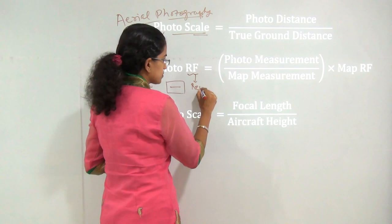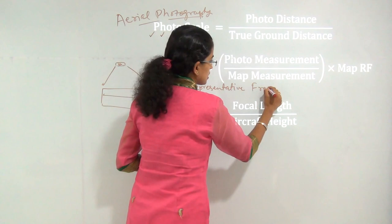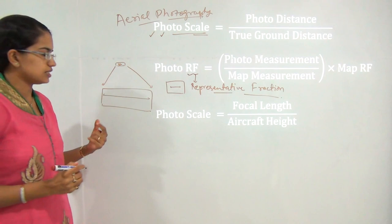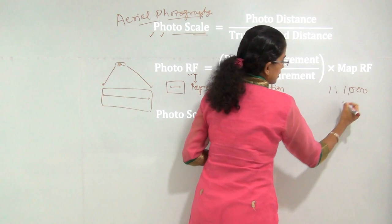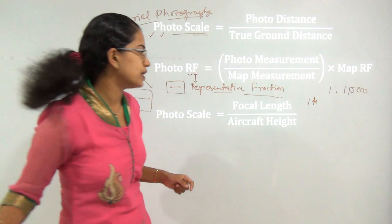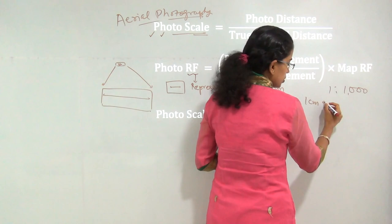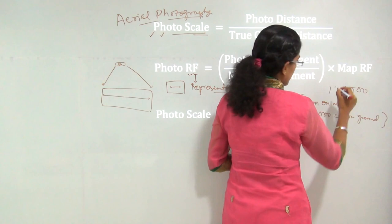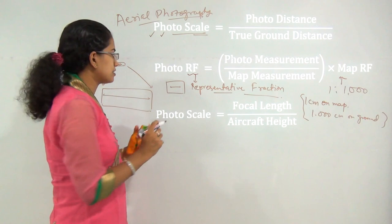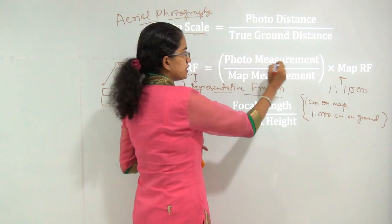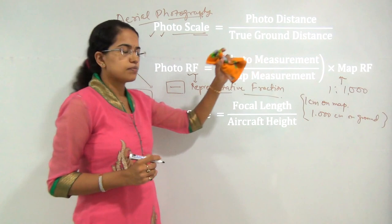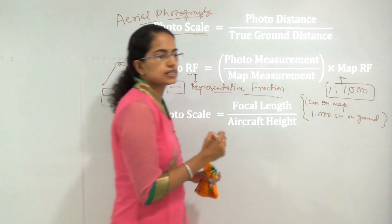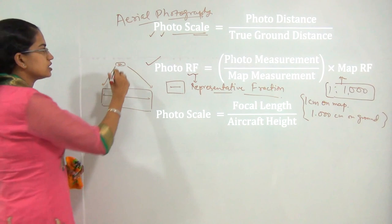An alternative method to understand photo scale is through RF — the Representative Fraction — which we have already discussed. For example, a representative fraction of 1:1000 means one centimeter on the map equals one thousand centimeters on the ground. To find the RF of an aerial photograph, you take the measurement on the photograph divided by the measurement on the map, multiplied by the original representative fraction.